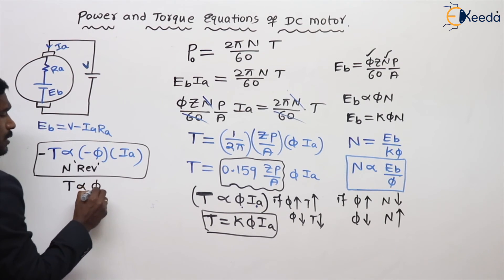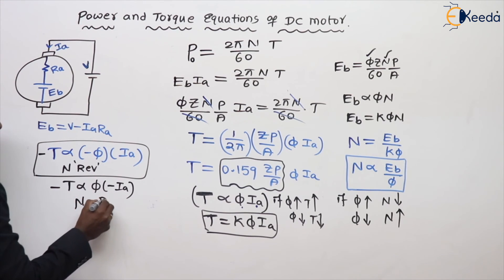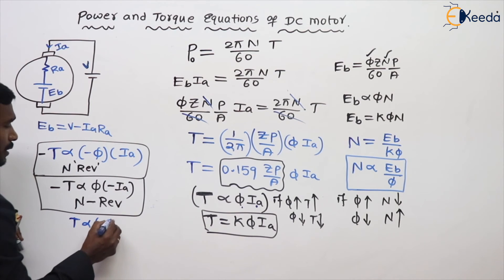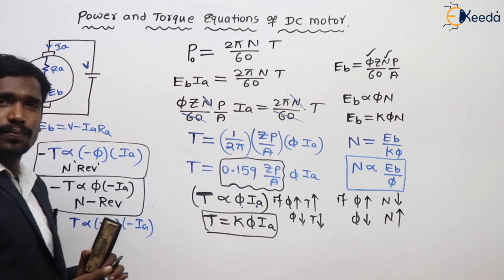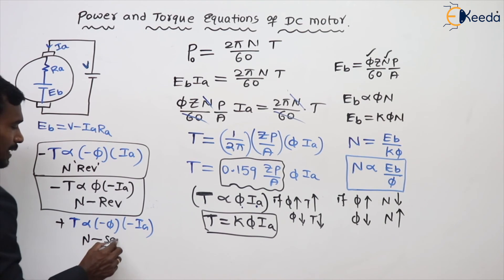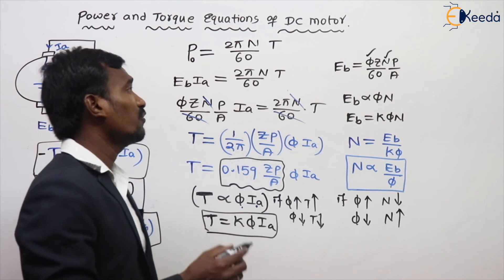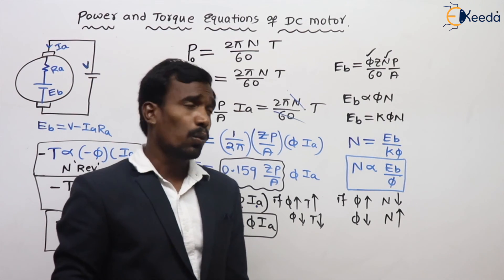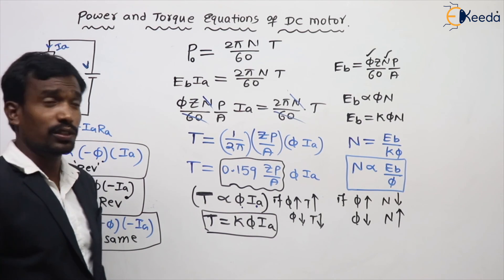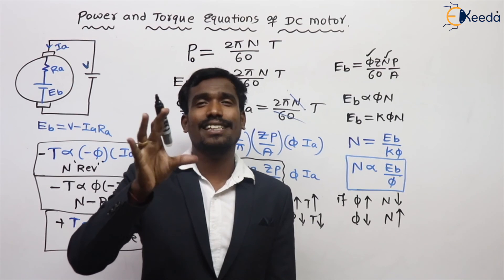The second case: torque is directly proportional to phi into IA. When armature current is reversed, minus into plus equals minus, so torque reverses and speed also reverses. If both flux and armature current are reversed — minus into minus equals plus — then the torque remains positive and the rotor rotates in the same direction. There is no change in the direction of rotor rotation.